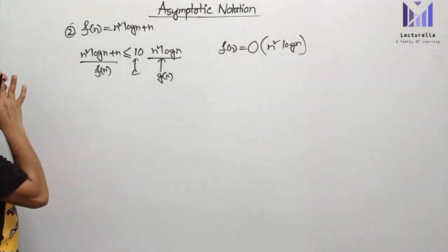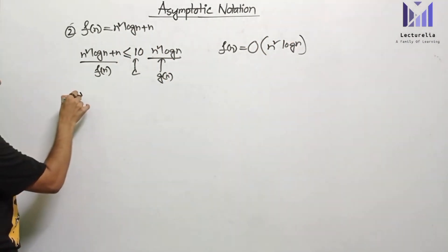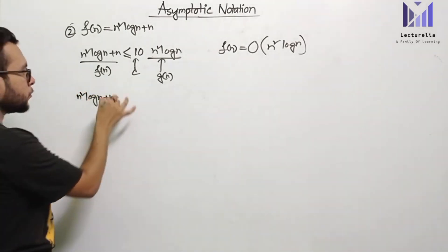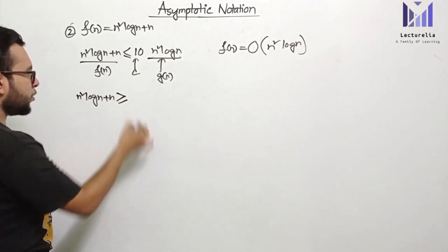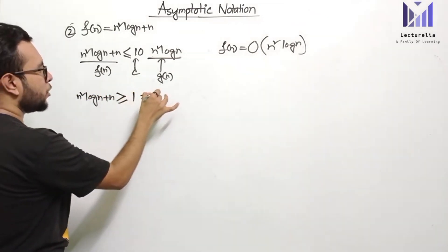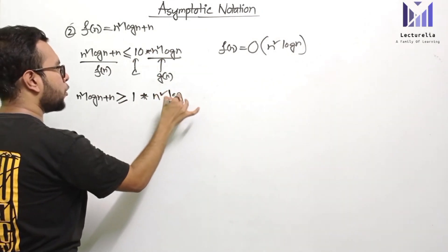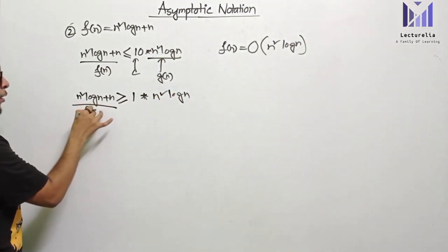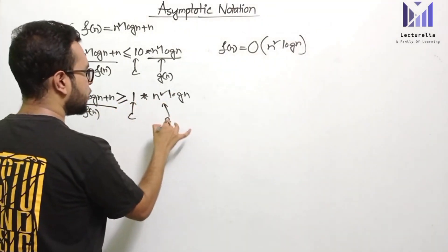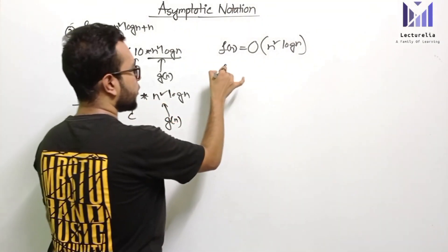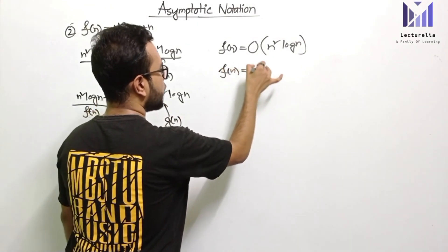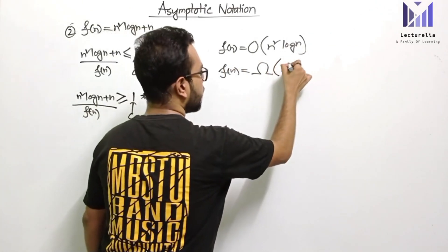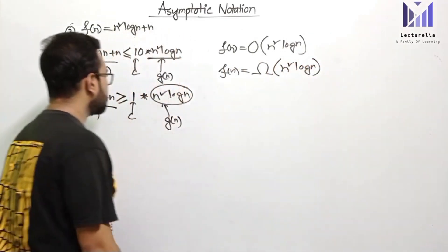If we want to represent using Big Omega notation: n² log n + n is greater than or equal to 1 into n² log n. So here f(n) satisfies c into g(n), and therefore f(n) is Big Omega of g(n), where g(n) is n² log n.